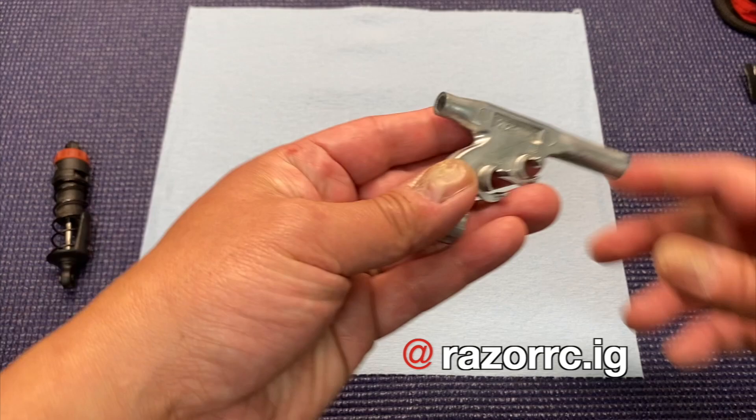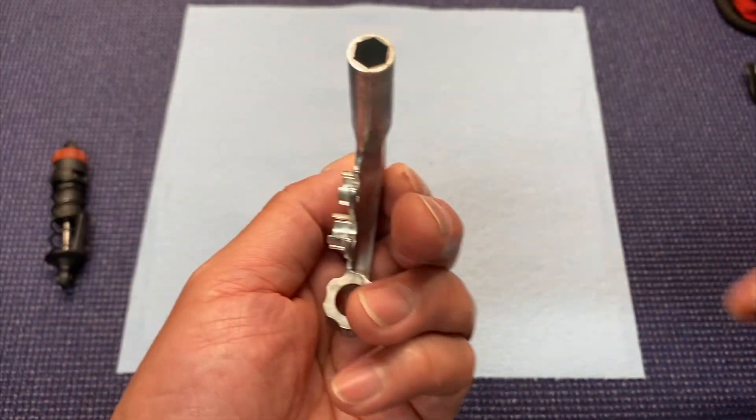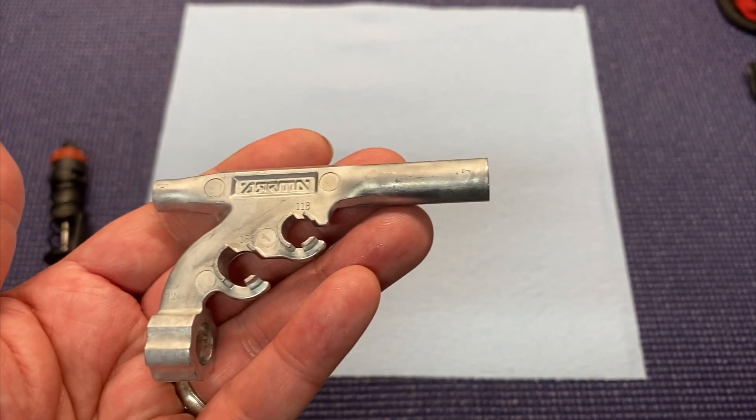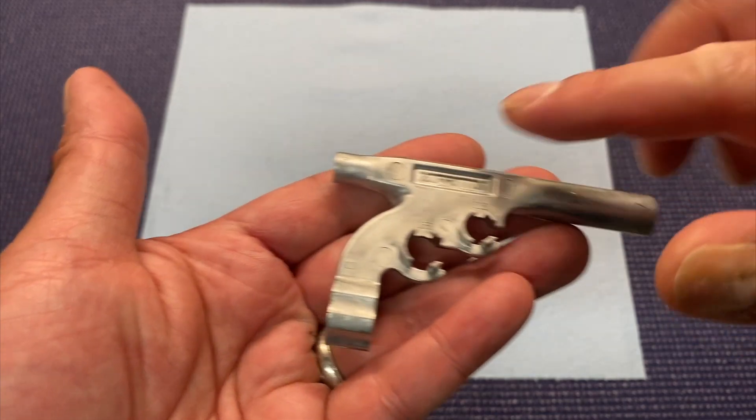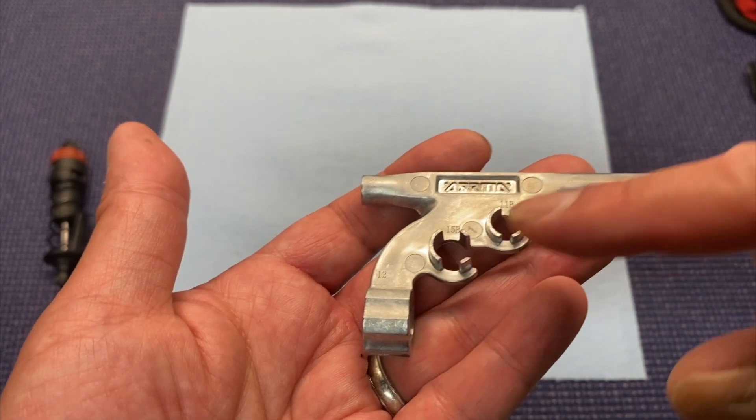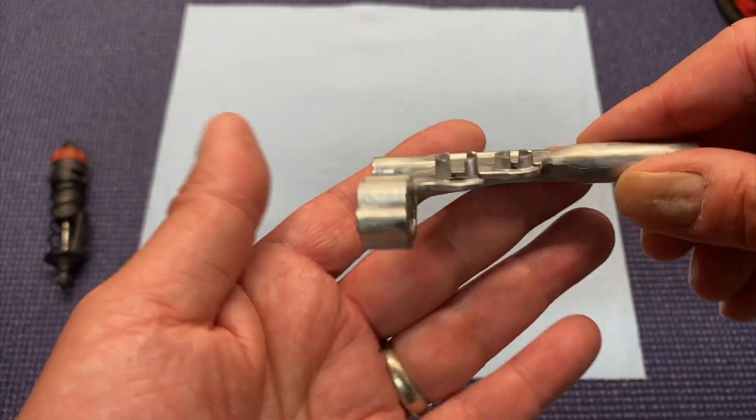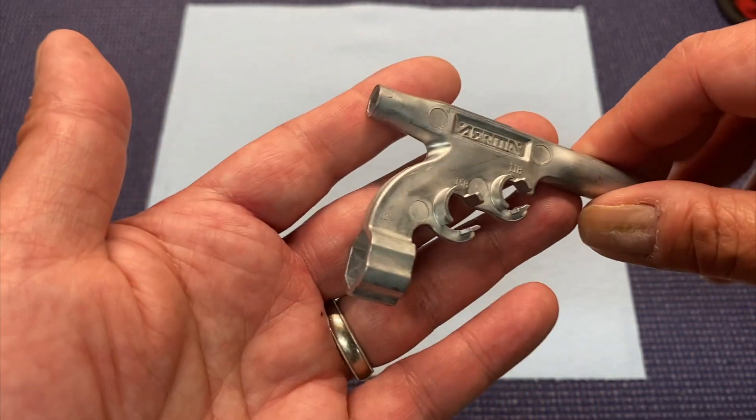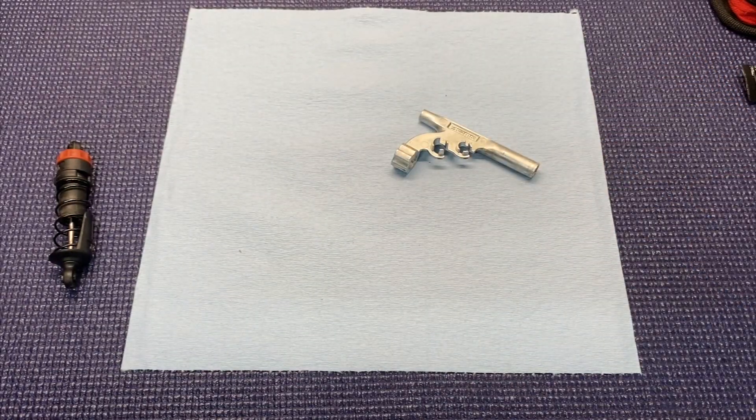But anyways, what this really is, is a bunch of different hex drivers. So you can see it's got a 7mm on one end, a 5mm on the other, and then also a 12mm here on the bottom. And then it's got these two other funky little things, and I just want to cover how to use this actual tool.